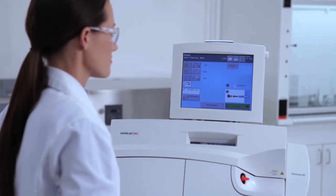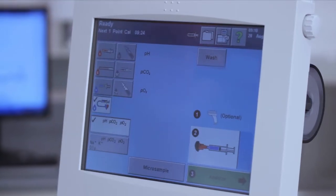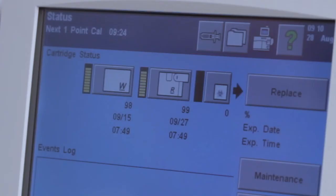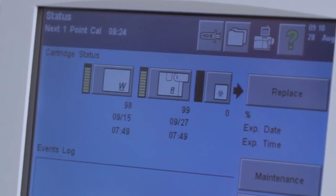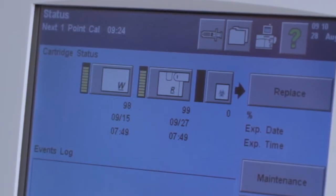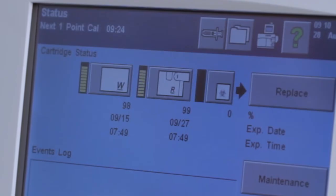To further speed workflow, commonly requested panels may be predefined and readily accessible from the main screen. The banner at the top of the main screen indicates the time to the next calibration, the type of calibration, pending QC routines and other various routine functions.